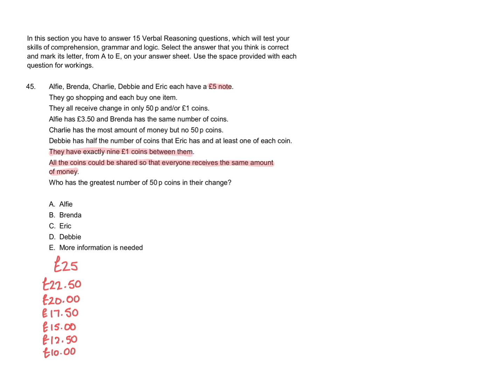So the amount of money which is left at the end of the question will be one of the amounts we can see here. Now let's start with Alfie who has £3.50. So we can say Alfie has a total of £3.50. Brenda has the same number of coins as Alfie but at the moment we don't know what that is.